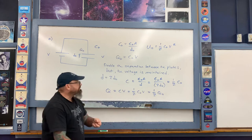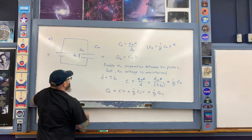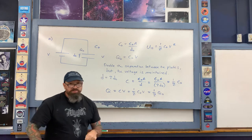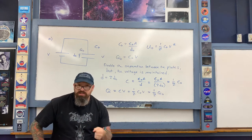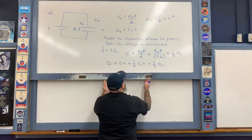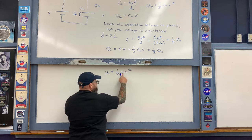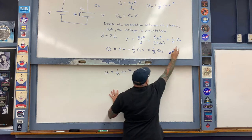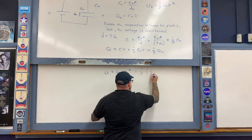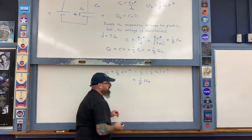So if someone doubles the plate separation while the capacitor is still hooked to the battery, charge flows back to the battery to maintain the voltage. The new potential energy U = ½CV² = ½(½C₀)V² = ½U₀ — one half of the original potential energy stored.